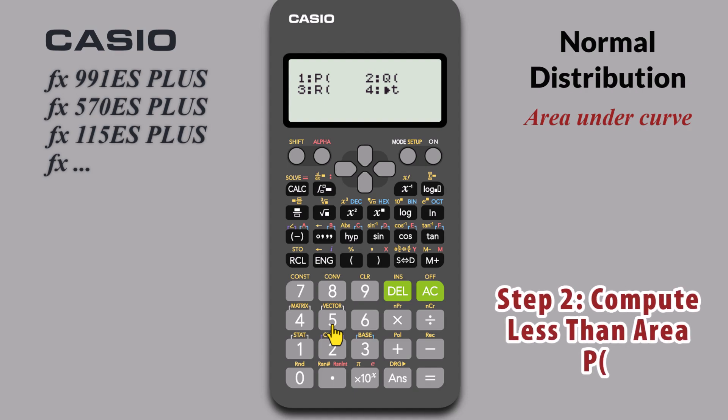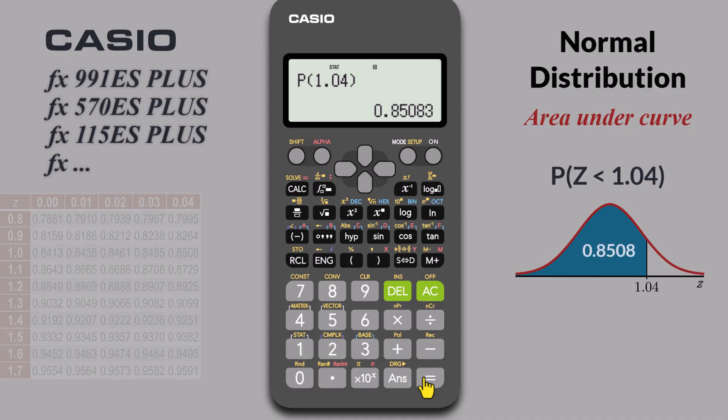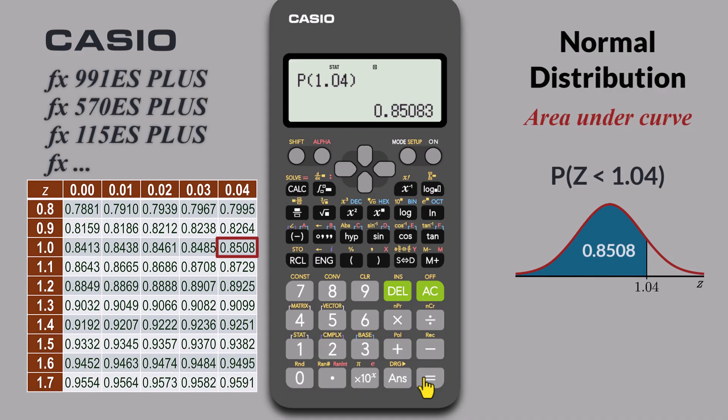Let's begin by finding the area less than Z equals 1.04. Select 1 for P. Enter 1.04. Closing the parenthesis is optional. Press equals. The result, 0.8508 agrees perfectly with the value found on the traditional Z table.